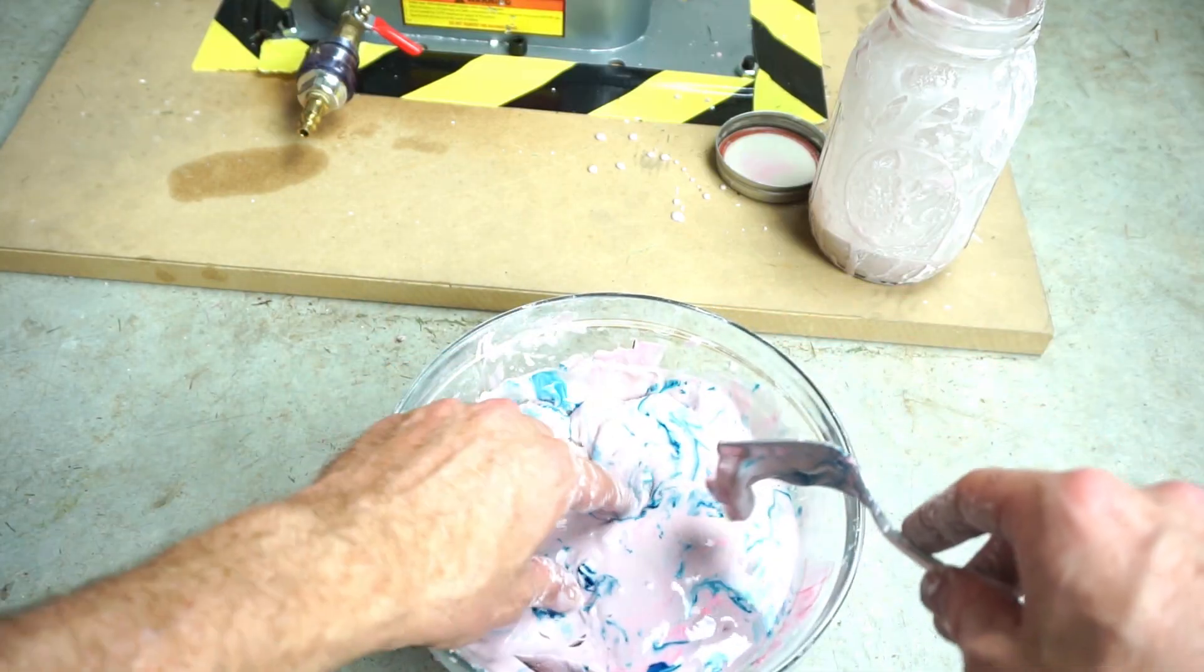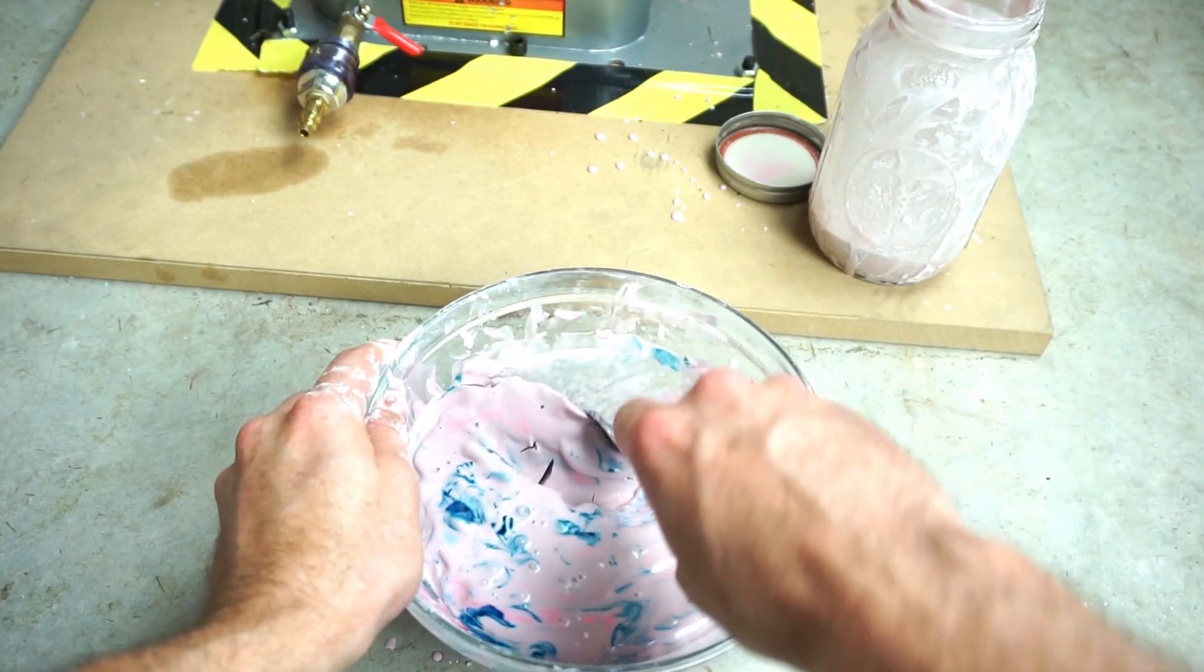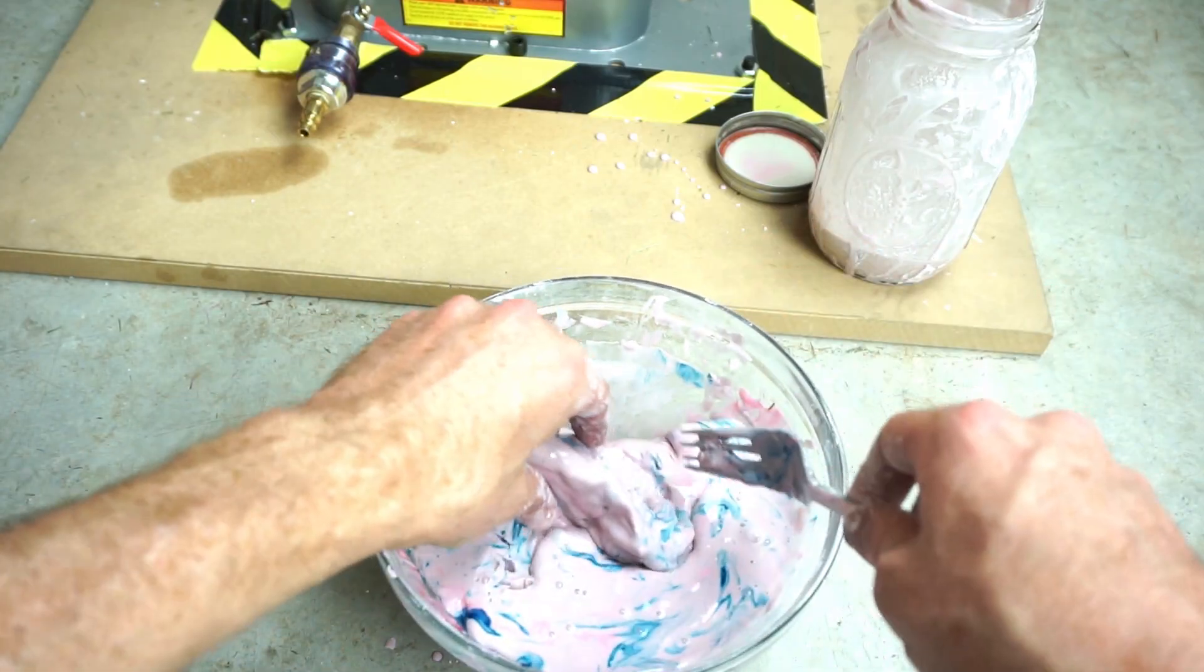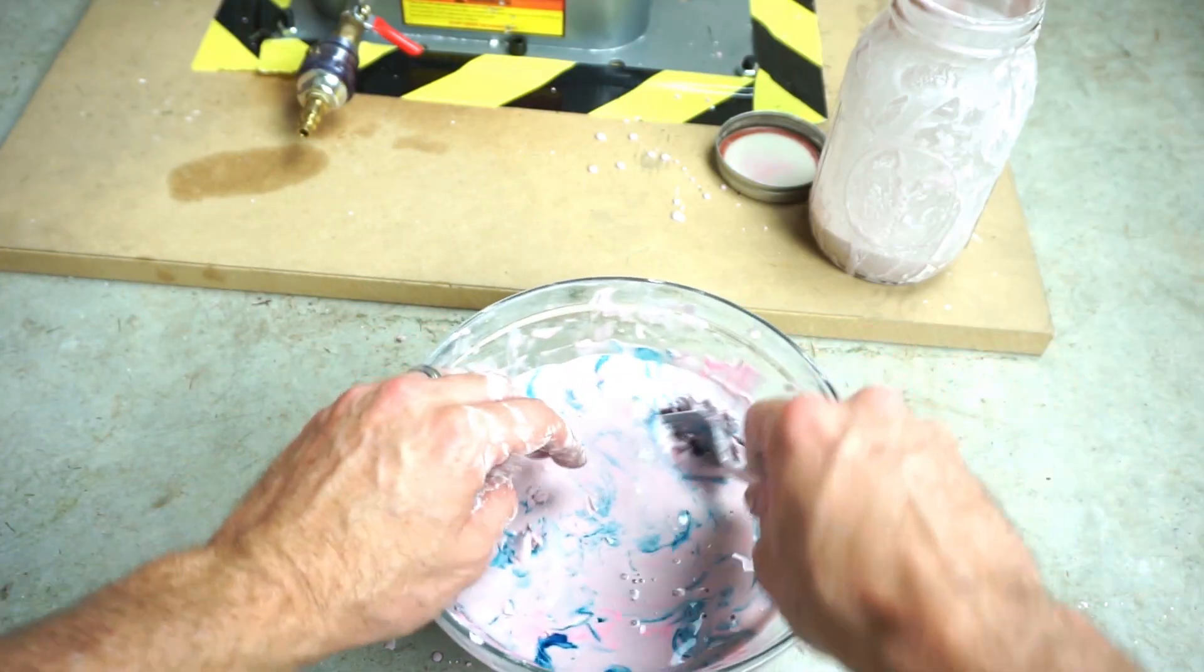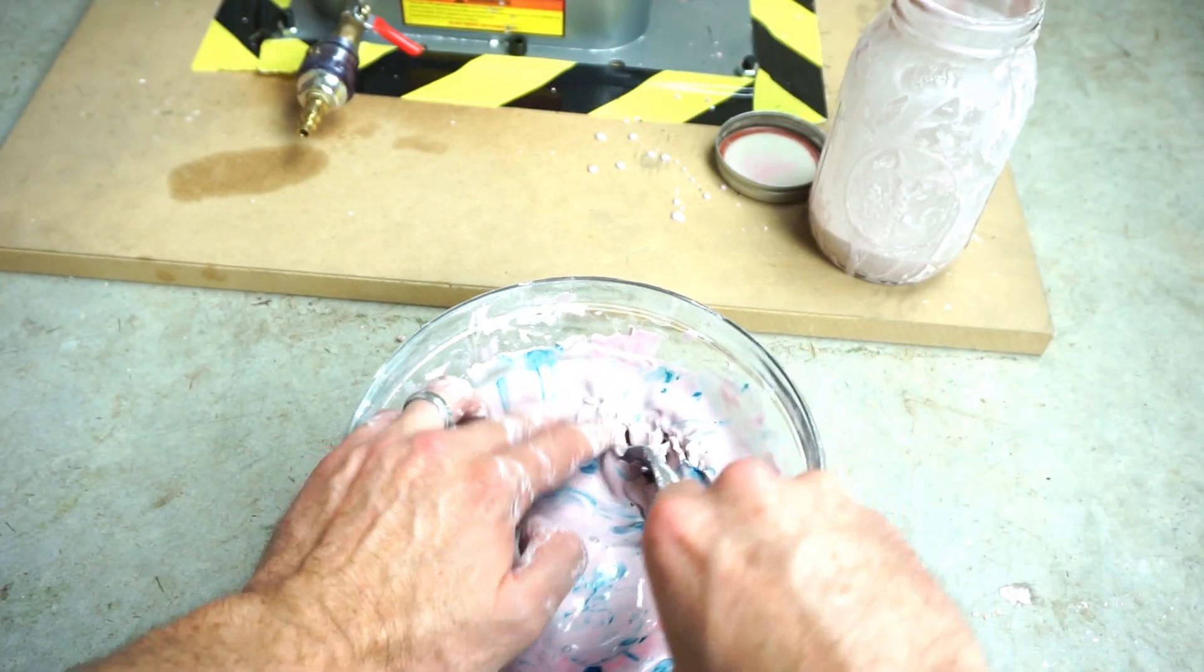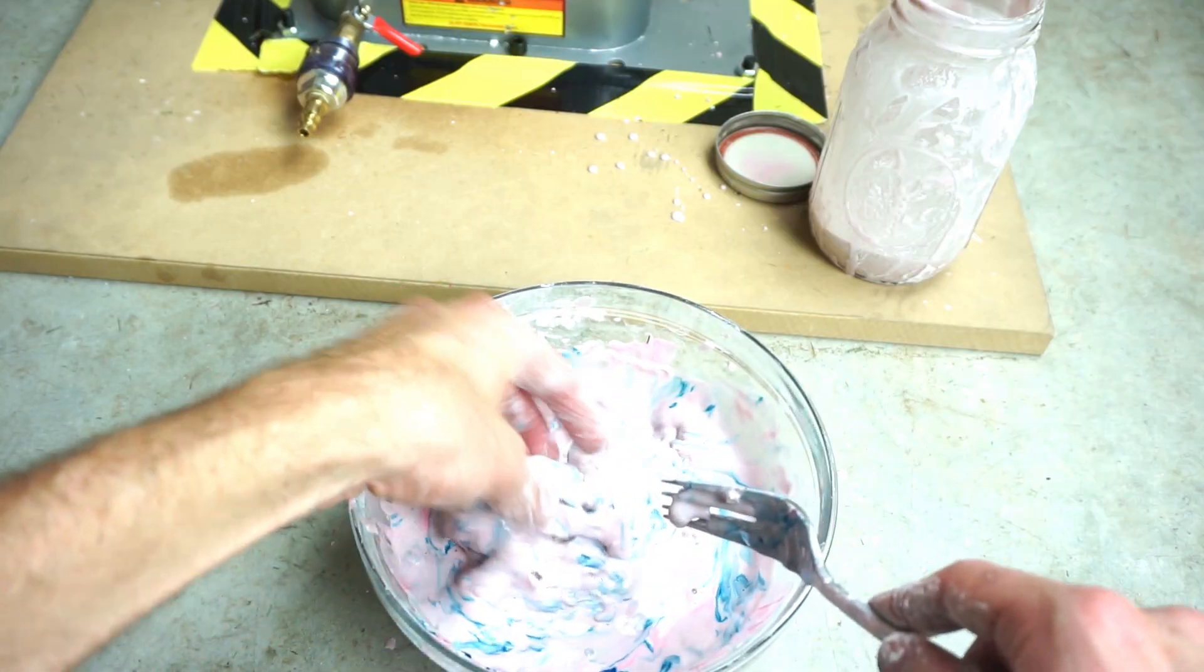See now compared to the paint shaker, this method is actually way less efficient. It takes me a lot longer to mix it this way. You can see how long this would take to mix all of this blue in, but you saw how fast and efficient the paint shaker did it.